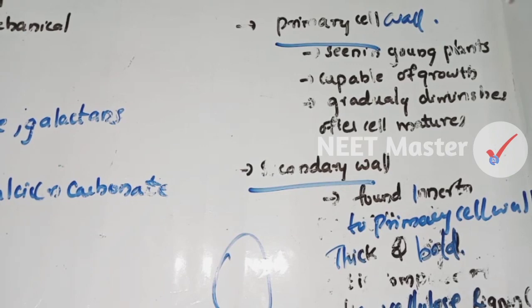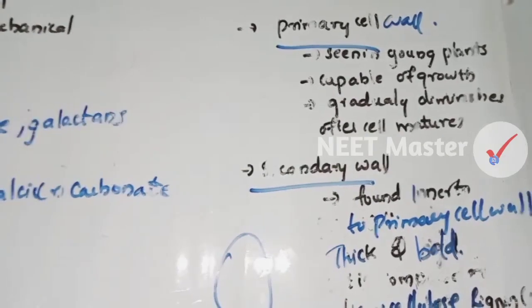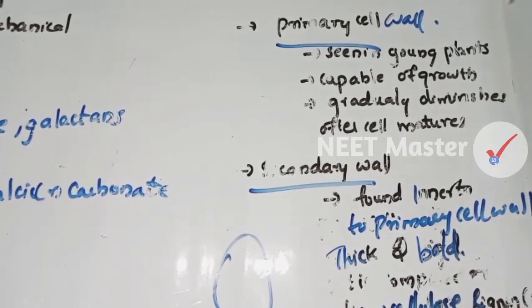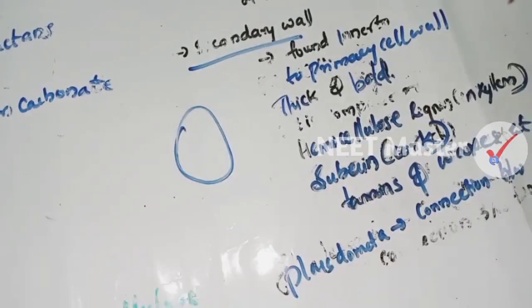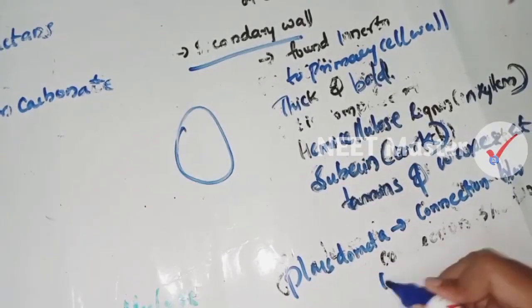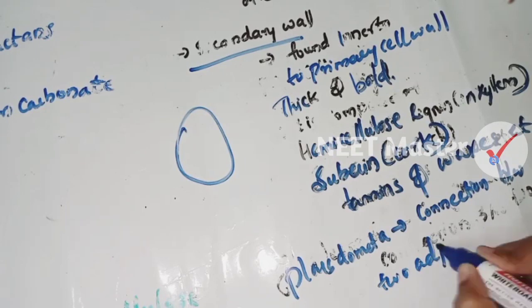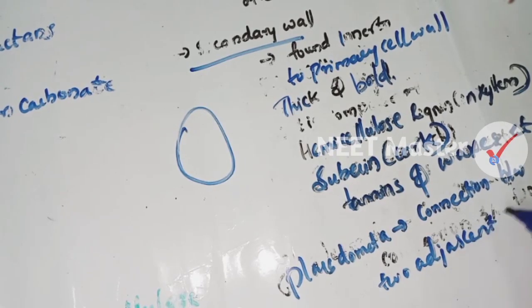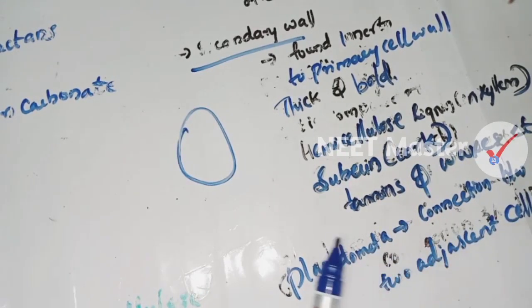Plasmodesmata means the connection between two adjacent cells. That is, plasmodesmata are connections between two adjacent cells. Thank you.